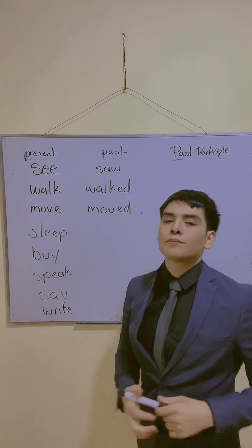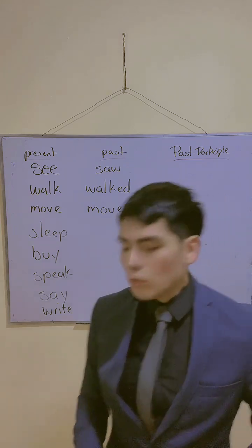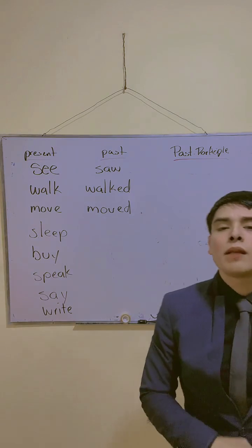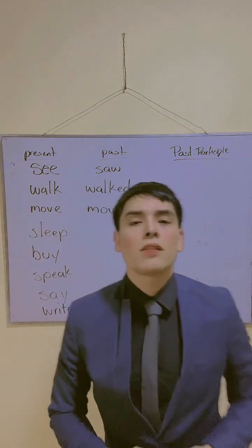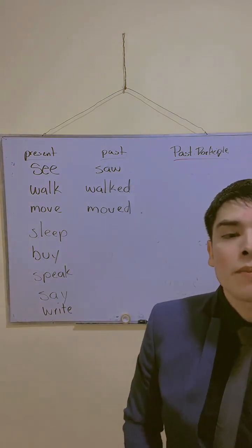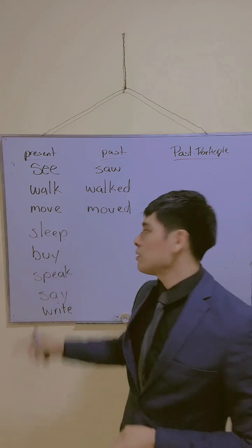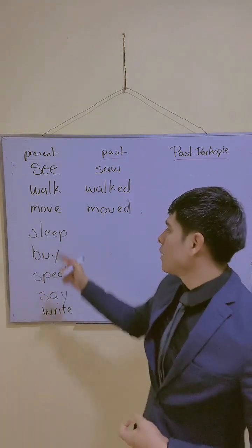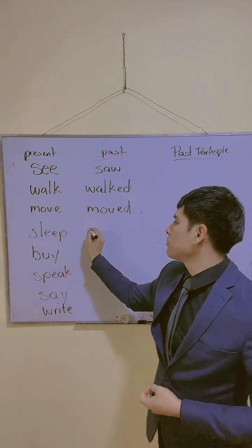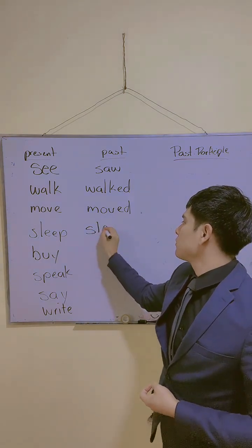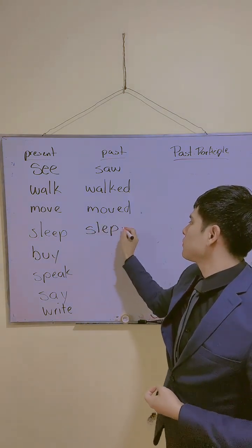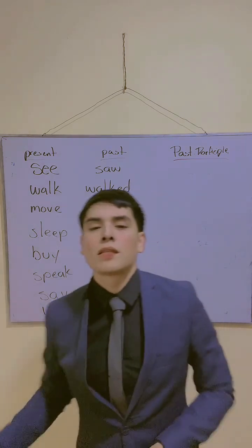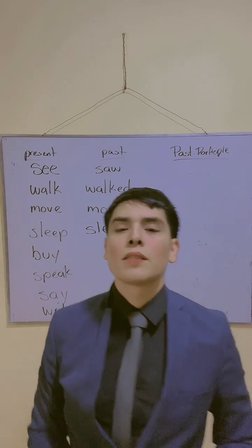Let's continue guys with 'sleep'. ¿Cuál sería la forma del pasado? Este es un irregular verb chicos. Por lo tanto el pasado vamos a decir: slept. Slept.